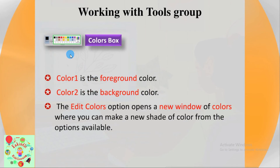The last tool we are going to study is the Colors box. In the colors box you will notice two color boxes: Color 1 and Color 2. Color 1 is the foreground color, whereas Color 2 is the background color. To select a color for Color 1, click on it and then select from the colors box. Similarly, to change Color 2, click the Color 2 box and select a color. There is also an 'Edit Colors' option.